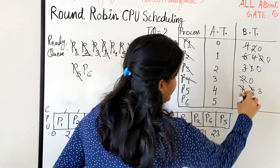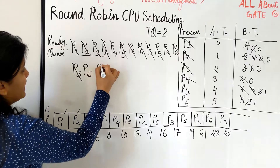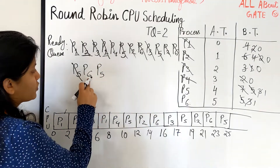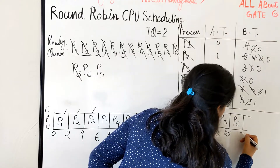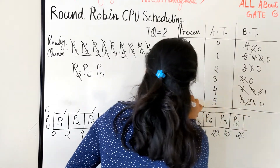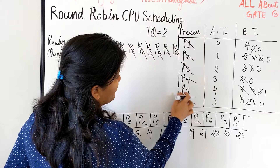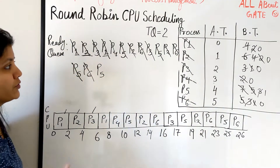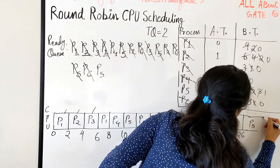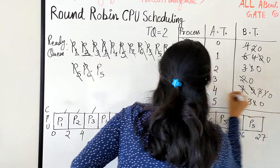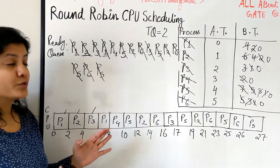P5 needs 3 burst units; we give 2 — up to 25 — leaving 1 remaining, so it comes back. Next is P6, which needs just 1 burst unit: 25 plus 1 is 26 — P6 is finished! Now every other process has finished except P5, which is the only one left in the ready queue. P5 needs just one more burst unit, so it finishes too.